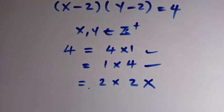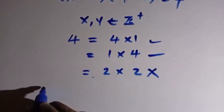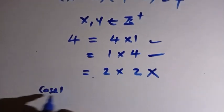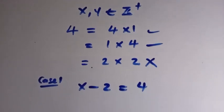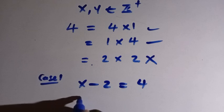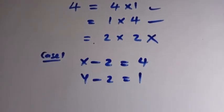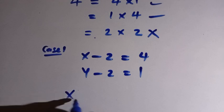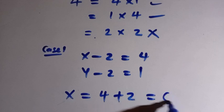So if you have to look for this, it shows that our case 1, x minus 2 here will be equals to 4, and y minus 2 will be equals to 1. So for the first one here, it shows that the value of x here will be equals to 4 plus 2 and this equals 6.